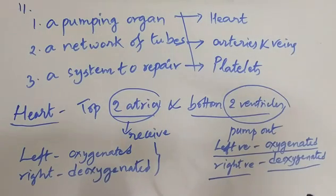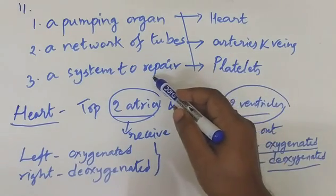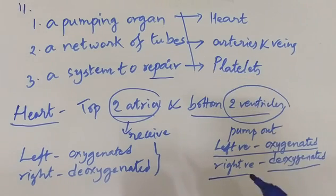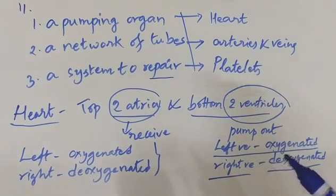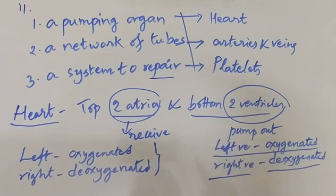At any place in these tubes, if a blood vessel gets damaged due to injury, the system to repair comes into operation. Platelets circulating in the blood help to plug the leaks caused by injuries, so that blood flow is restored and blood pressure is maintained, ensuring all organs receive oxygenated blood.